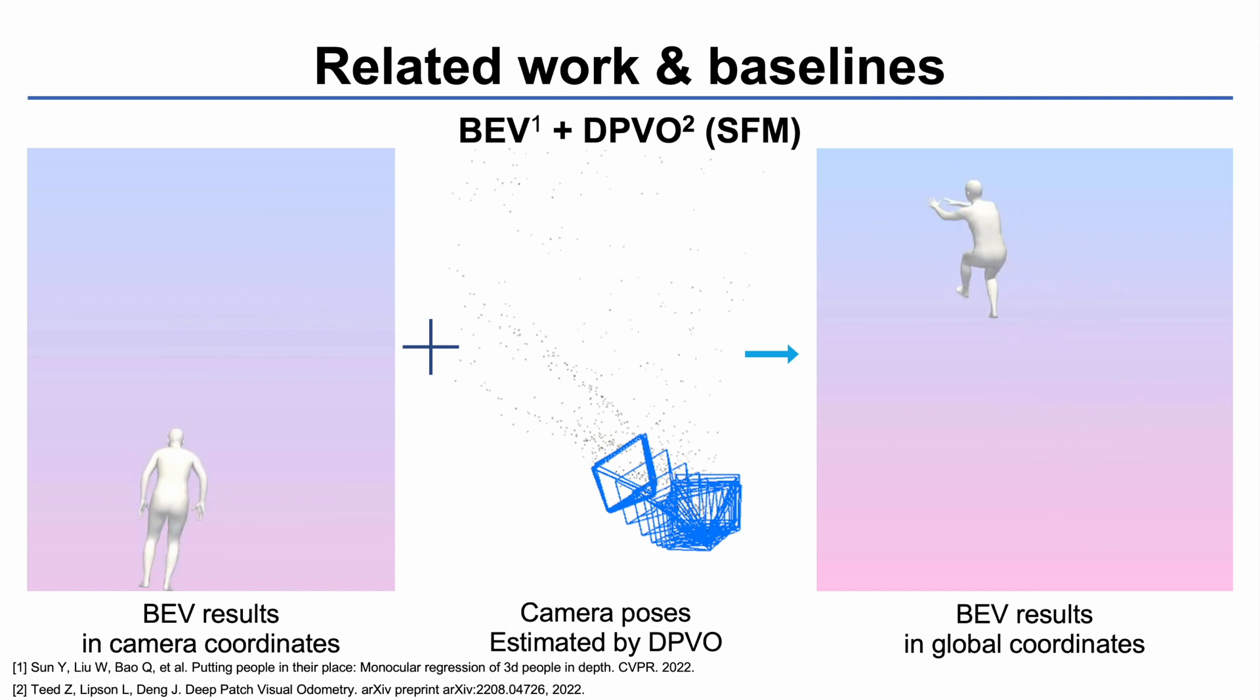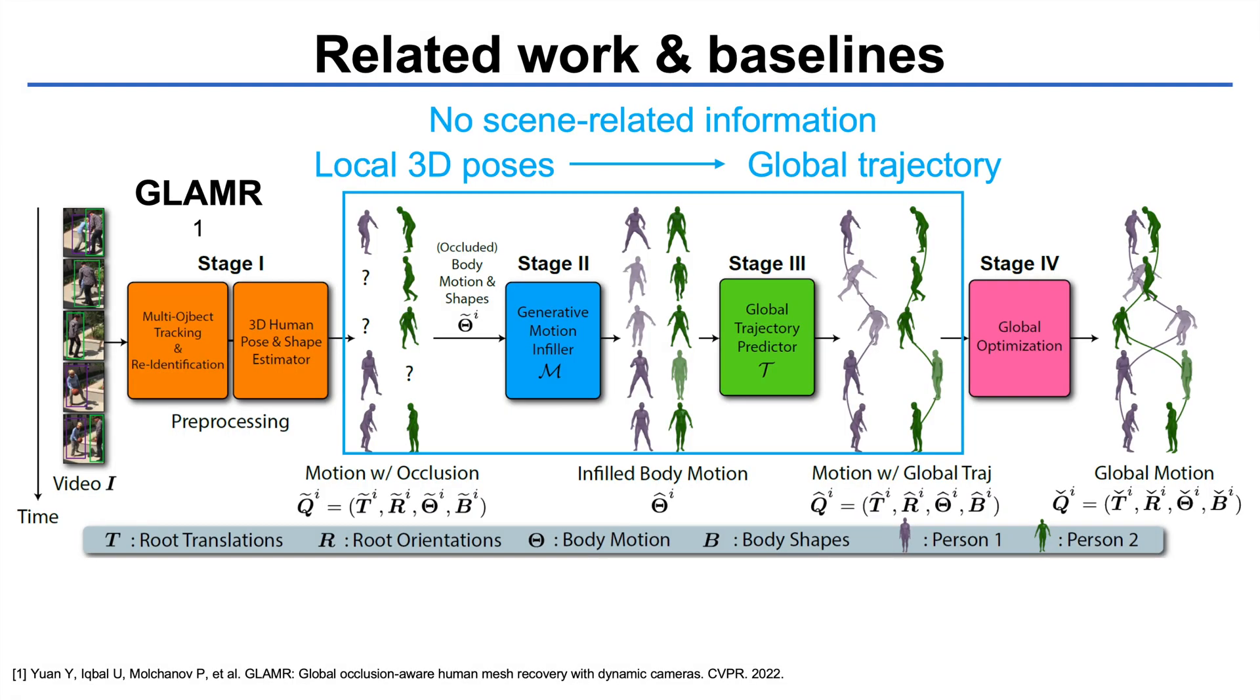However, when the input video contains moving subjects, it is hard for SLAM methods to reliably estimate the camera. The second baseline method is the recent state-of-the-art method, Glamour. Glamour infers the global human trajectory from the local 3D poses but does not take scene-related information into account.